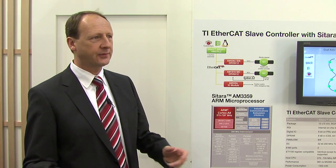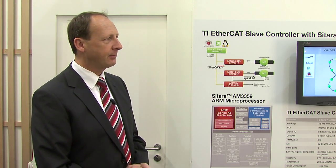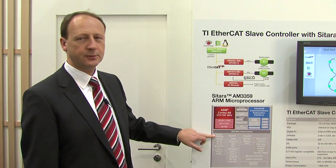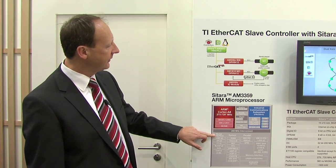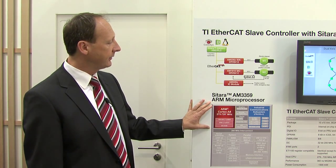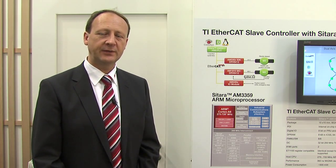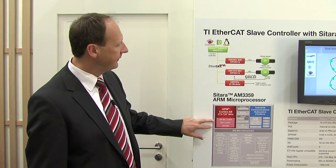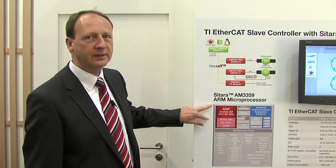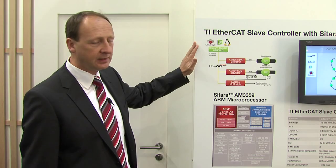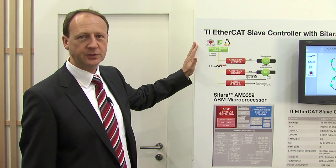Very important to understand for industrial communication applications is a fast interconnect of 200 megahertz with the application processor. The application processor also runs the stack software and leaves enough headroom to run applications such as HMIs, PLCs, and motor control.